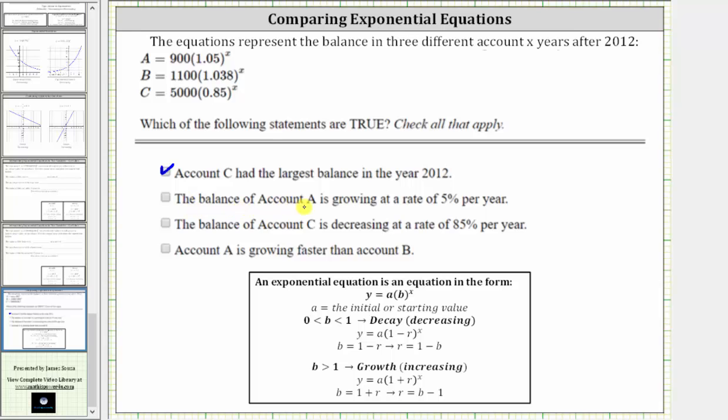Next, the balance of account A is growing at a rate of 5% per year. So looking at equation A, notice how the base B is 1.05. Because the base B is greater than one, we know we have exponential growth.